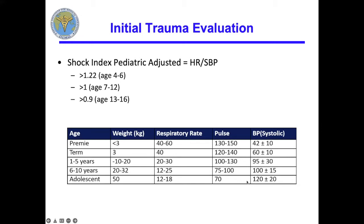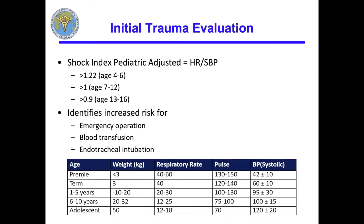Ages four to six: if heart rate over systolic blood pressure is greater than 1.22, you need to start worrying. For other age groups, the thresholds are greater than 1.0 and greater than 0.90. This has been validated in large civilian series and there is newer data in the military population. SIPA identifies increased risk for emergency operation, blood transfusion, and endotracheal intubation. In some pre-hospital studies it actually outperforms hypotension at identifying those things.